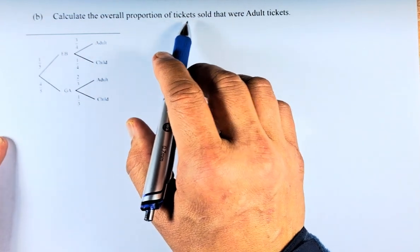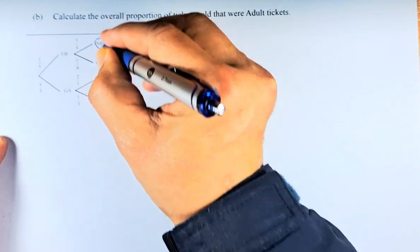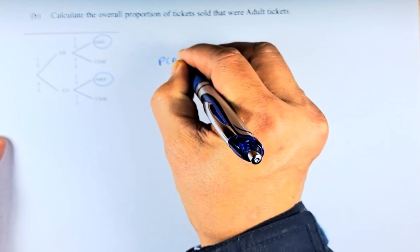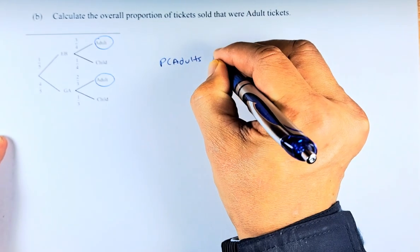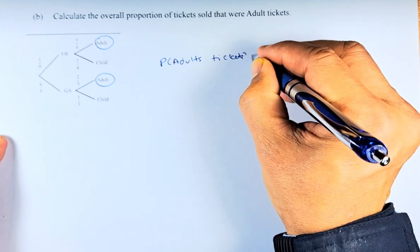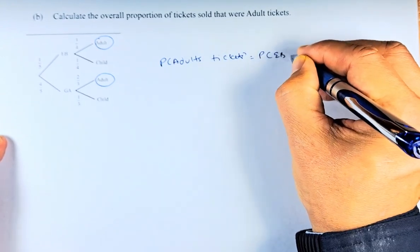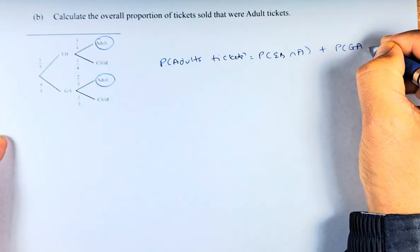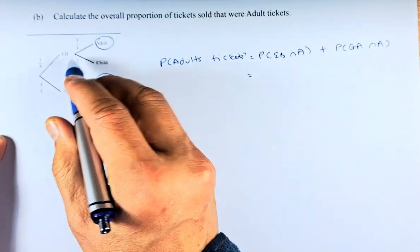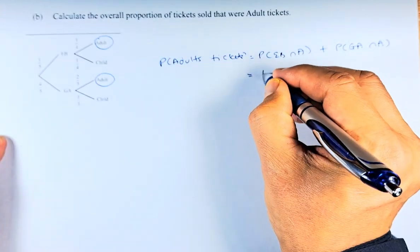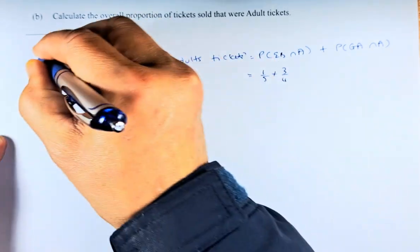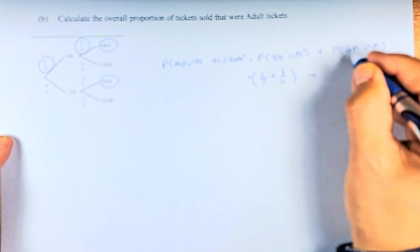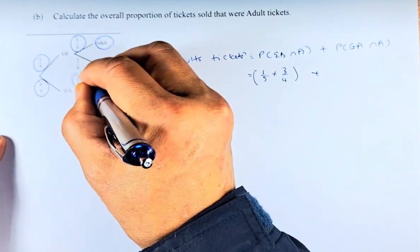Calculate the overall proportion of tickets sold that were adult — so it could be early bird adults or general admission adult. The probability of adult tickets is equal to the probability of early bird and adult plus the probability of general admission and adult. The probability of early bird and adult is one-fifth times three-quarters.